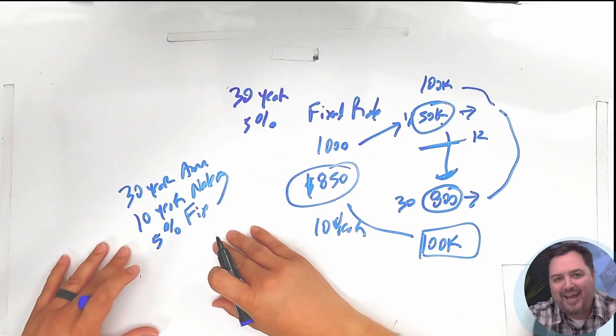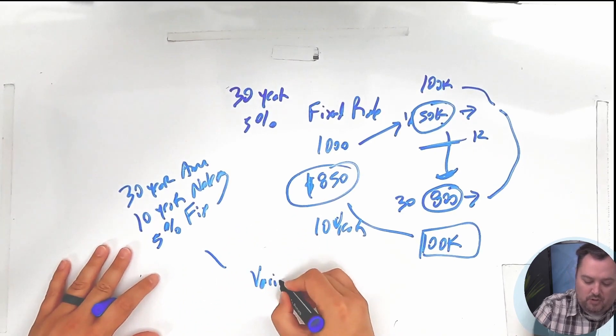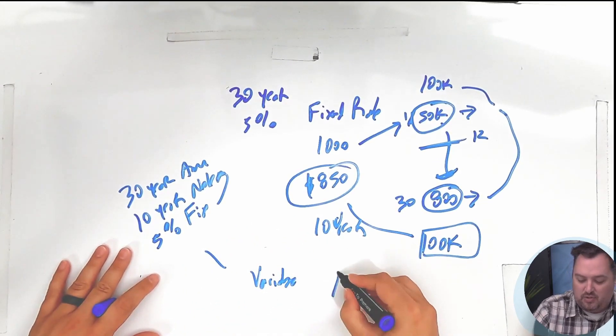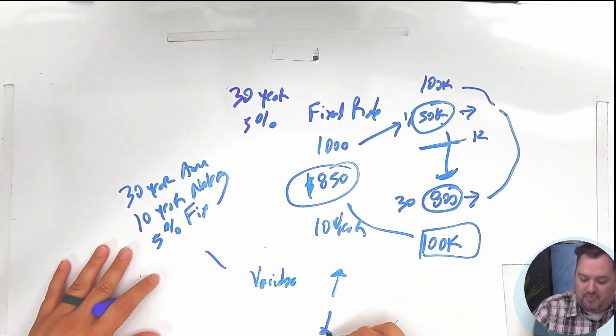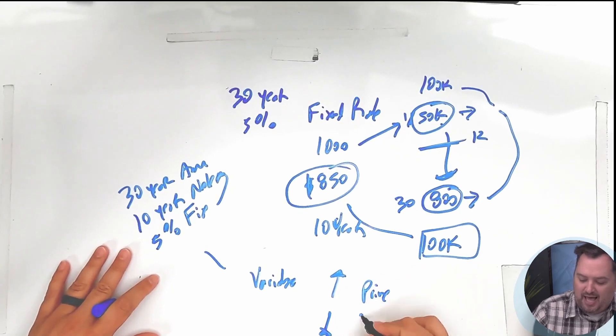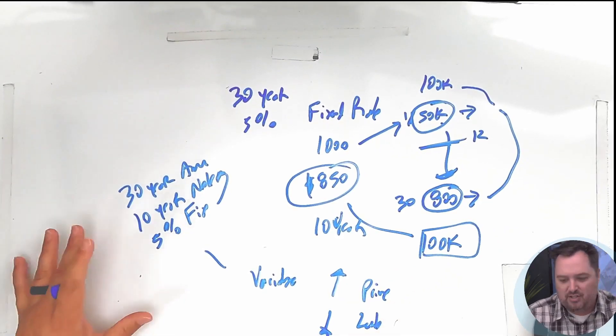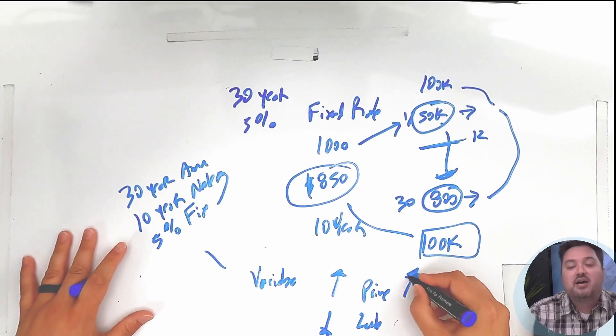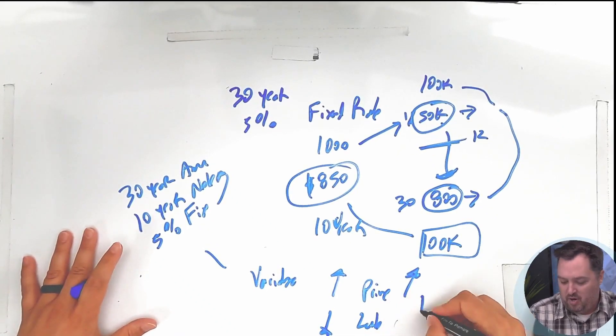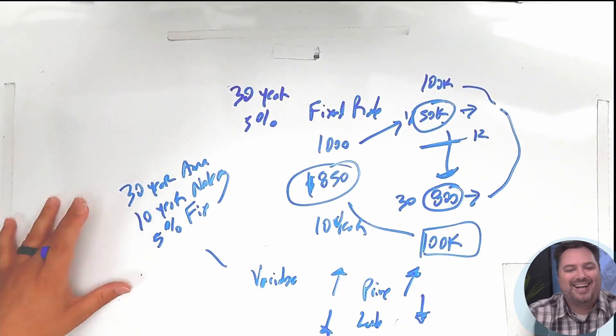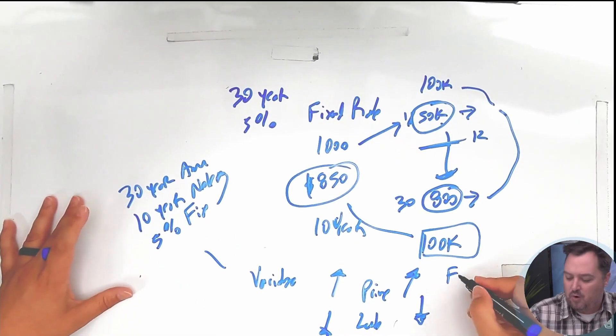This is where a lot of people got in trouble—they would do variable rate, which means it goes up or down based upon prime or LIBOR, which is an index. If the market goes up, you pay more. If the market goes down, you pay less. With this, they typically have what's called a floor.